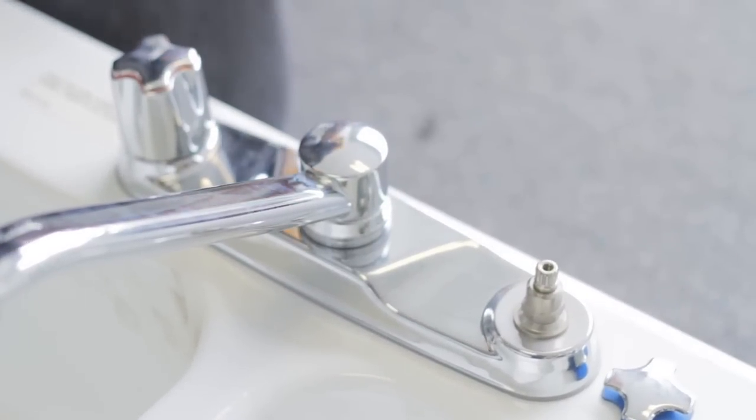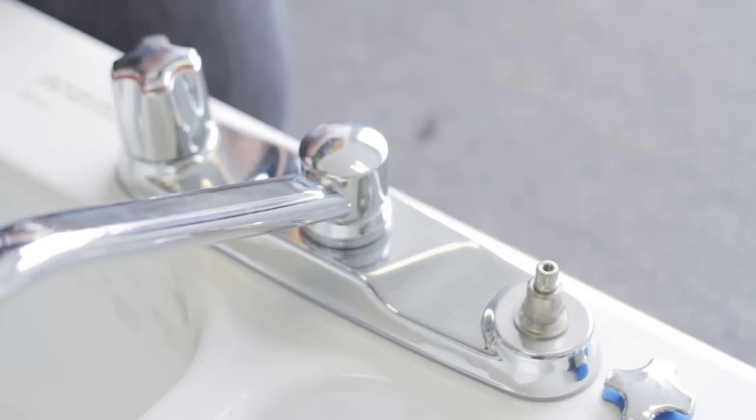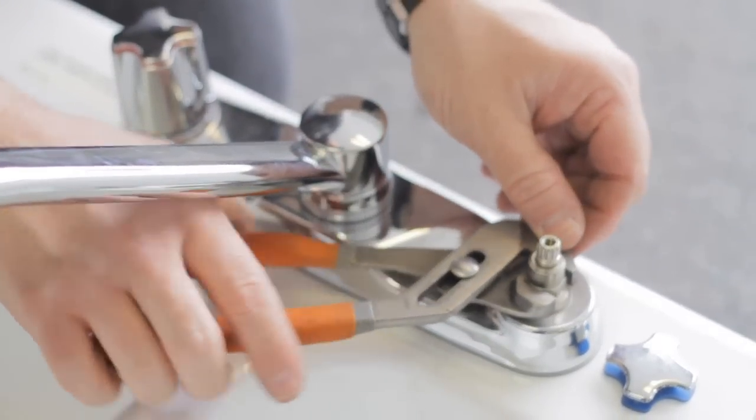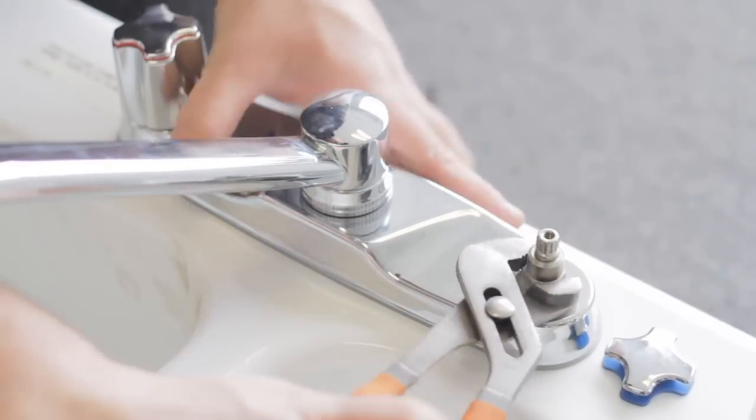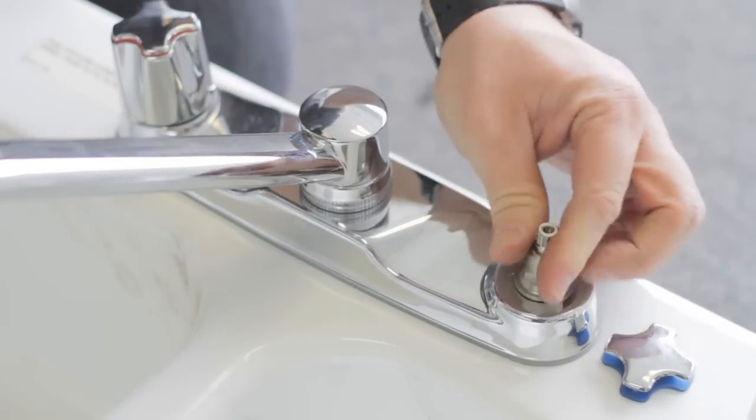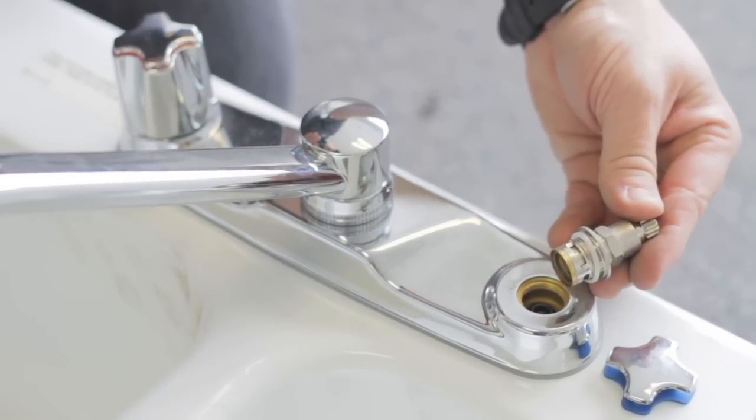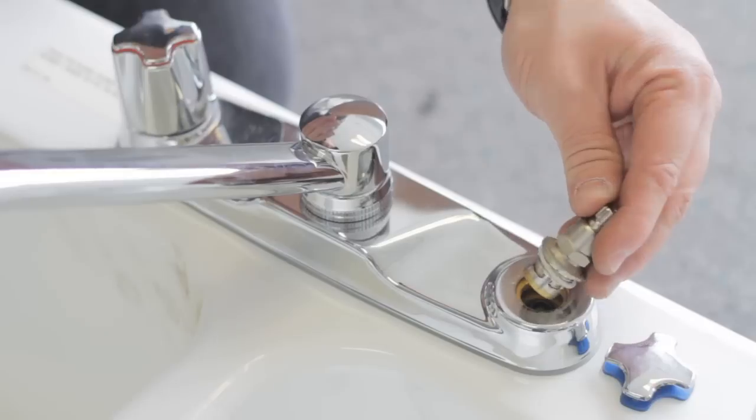Once you remove your handle, you'll need a crescent wrench or a pair of pliers to remove the stem or cartridge. Now this particular one, the stem screws right into the faucet. On some of them you'll have a separate lock nut that holds the stem in place.